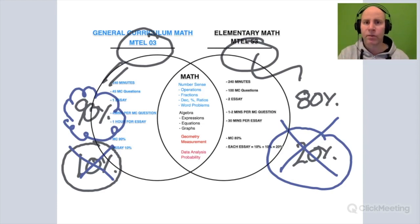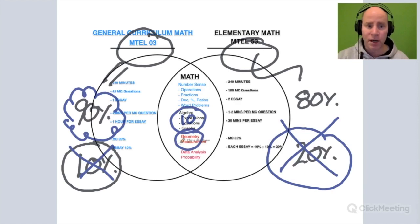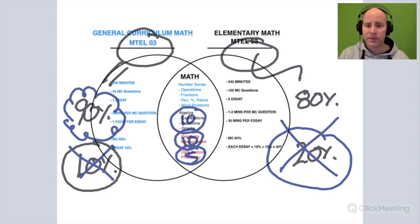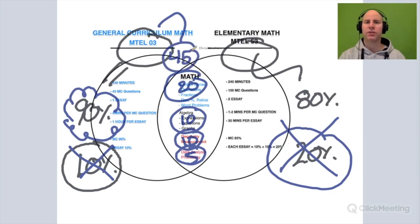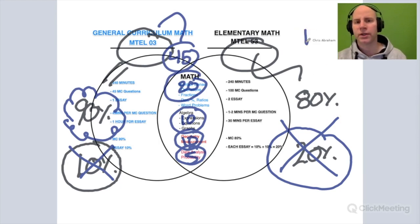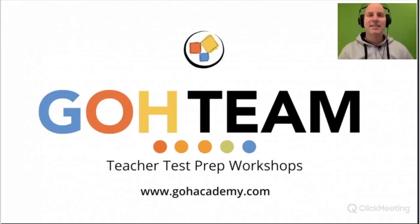Most of you in the group are taking the general curriculum 03. As you do your studies, clarify the topics from class: you'll have about 10 algebra questions and 10 geometry questions, and 5 or 6 data analysis and probability questions. There are 45 multiple choice questions in total on the general curriculum, compared to 100 on the 53 — a big difference in volume.